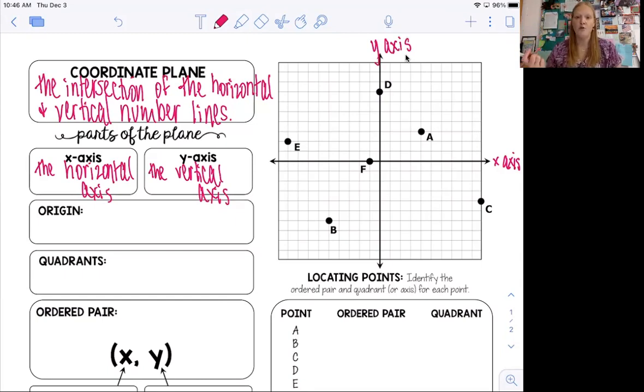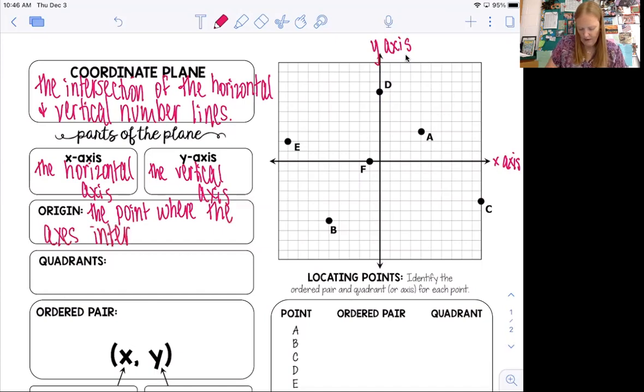Okay, so the origin is the point where the two axes intersect. So it's the point, because it's actually a point on the coordinate plane, and we'll name it in just a second, the point where the axes, so plural for axis is axes, so it looks like axes, the point where the axes intersect, and because that's the origin, it's the beginning of everything, we call it 0, 0.